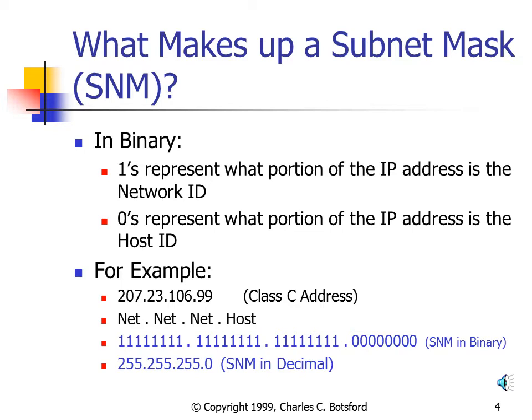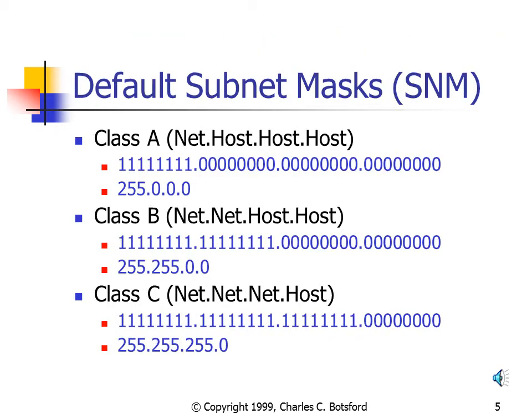When we convert these binary numbers to decimal numbers, the subnet mask would be 255.255.255.0. These are our default subnet masks.